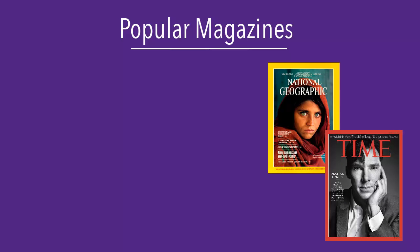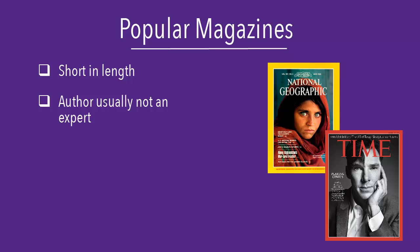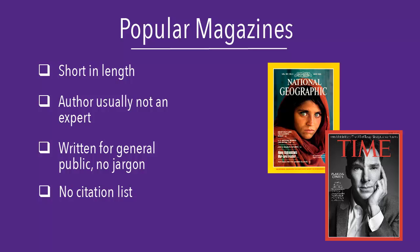Popular magazine articles are usually fairly short. You won't always find the name of the author listed, and the author of the article is not necessarily an expert on the topic being discussed. Popular magazine articles are written for the general public and don't contain a lot of technical language. You also won't find a list of citations at the end of these articles.